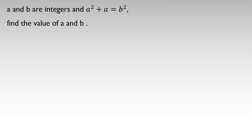A and b are integers and a squared plus a equals b squared. Find the value of a and b. For solving this problem we check small numbers. We know a squared plus a equals b squared, and we can factor to get a times (a plus one) equals b squared.